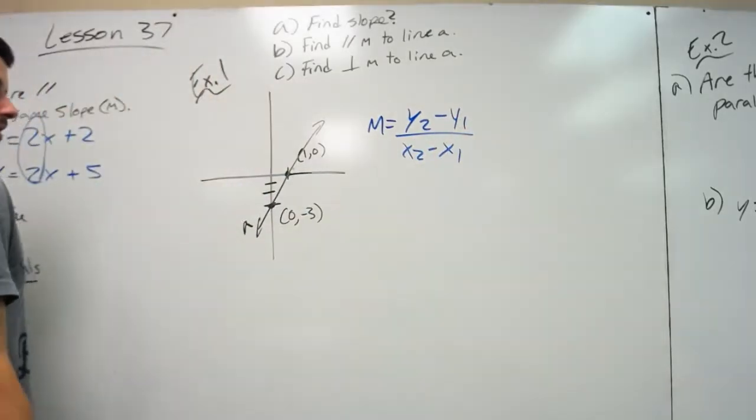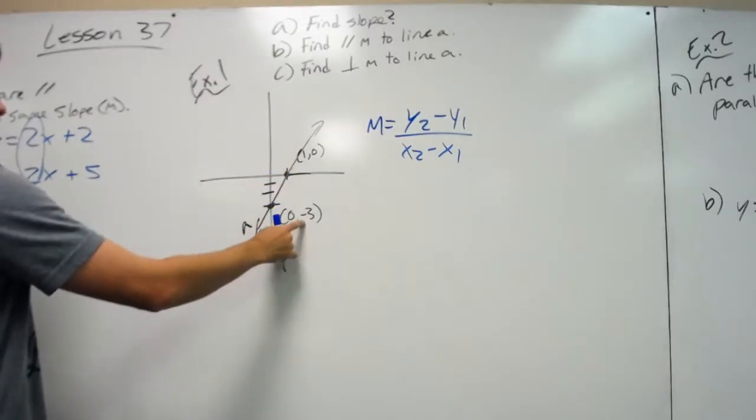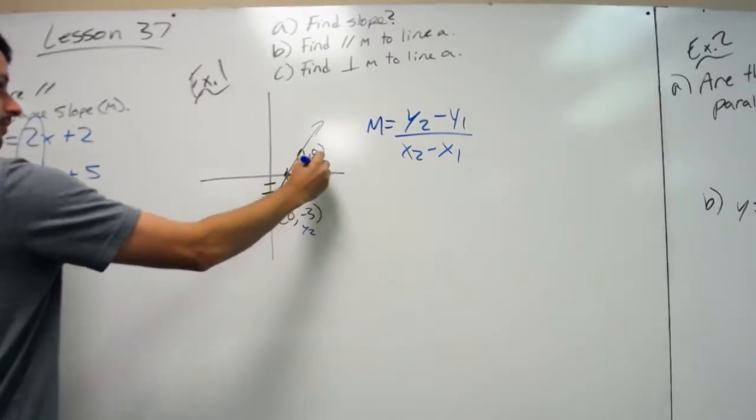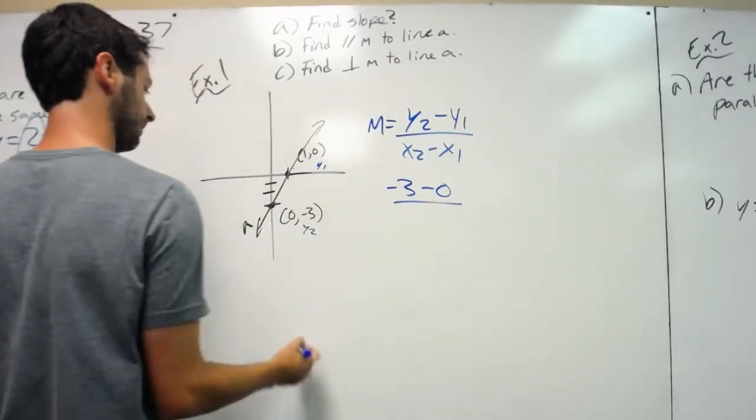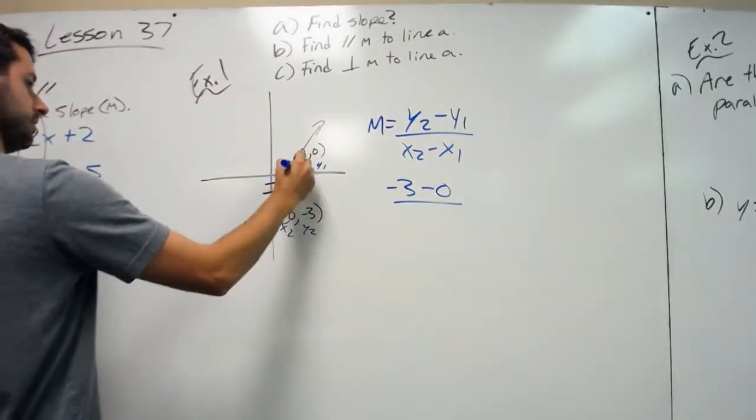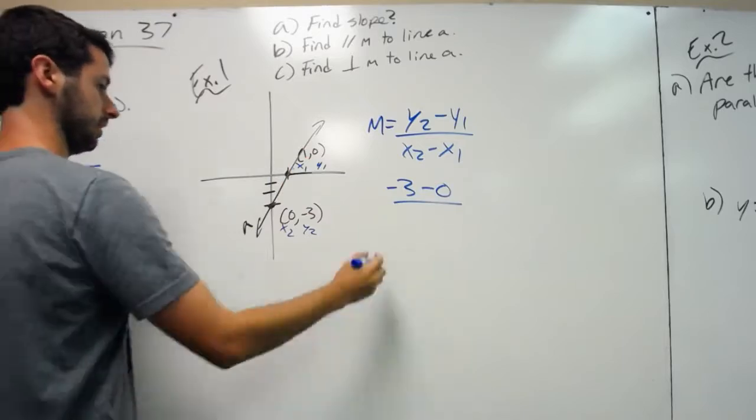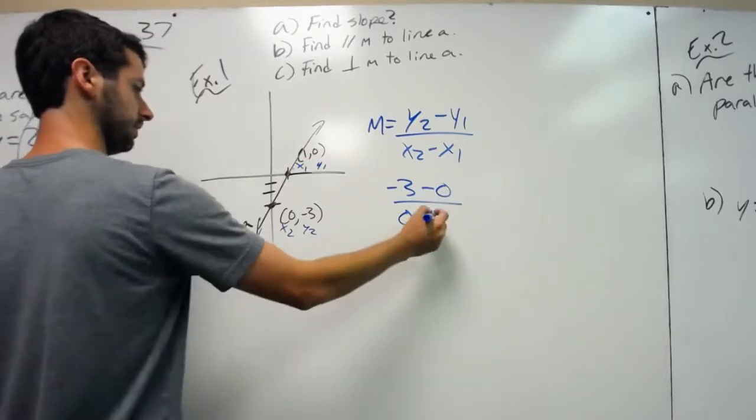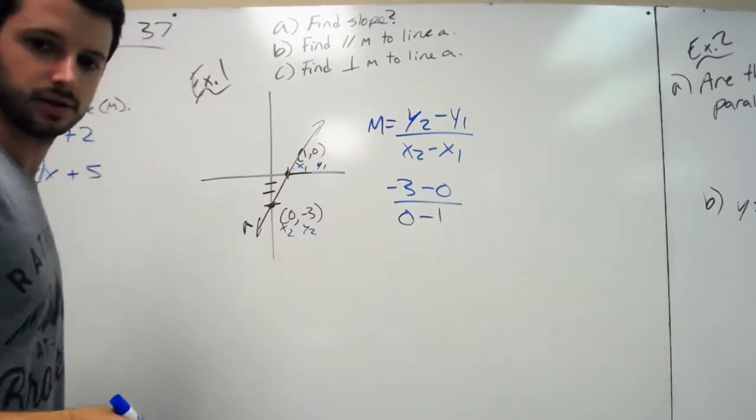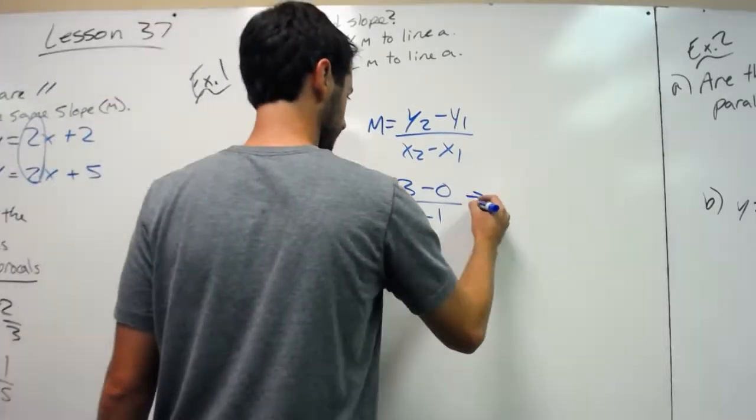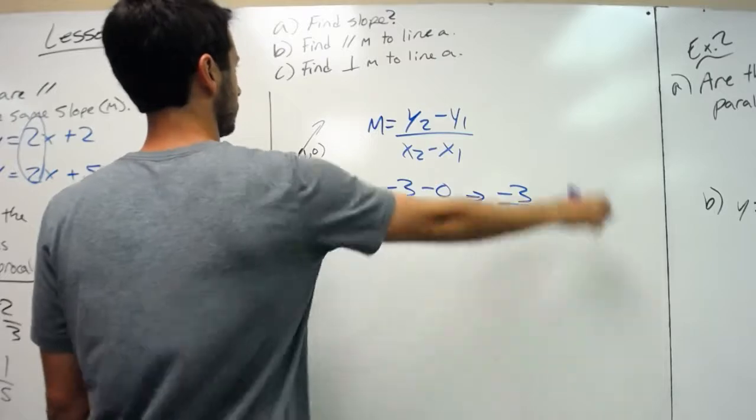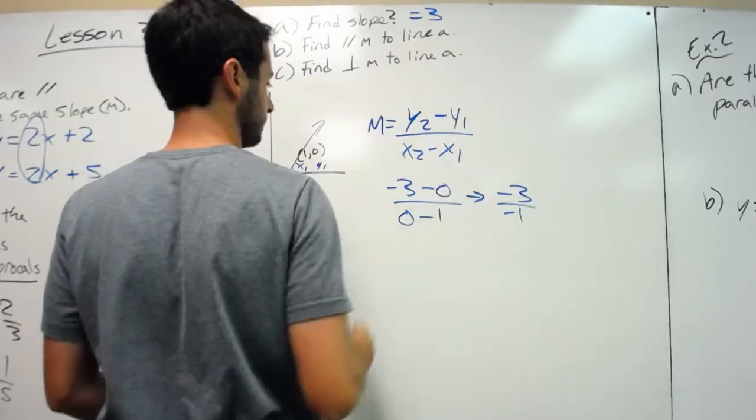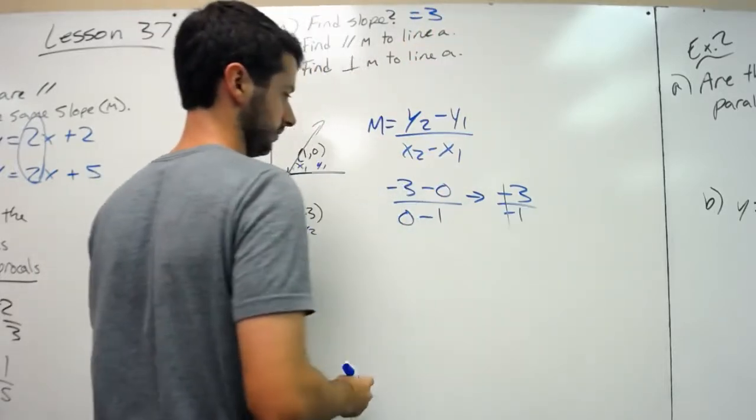So y2 is negative 3, y1 is 0, x2 is 0, and x1 is 1. We solve to get negative 3 over negative 1, so your slope equals positive 3.